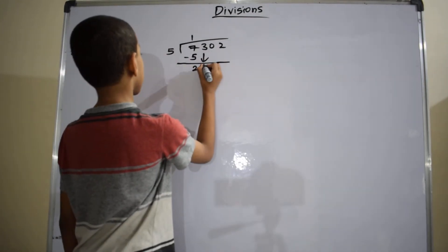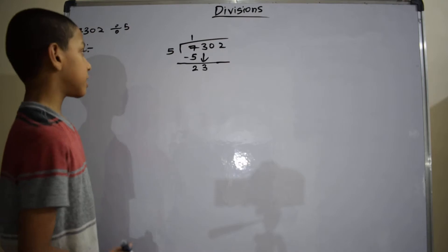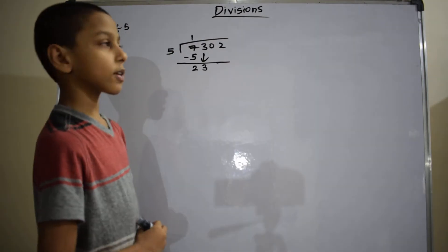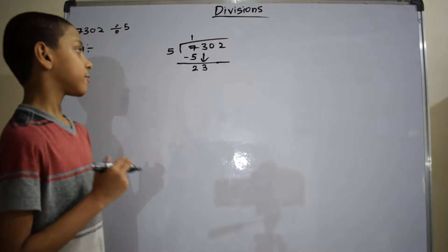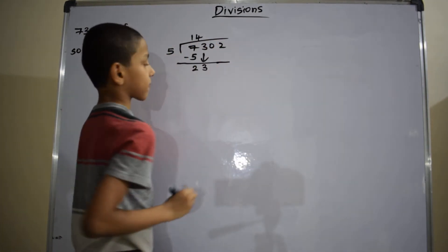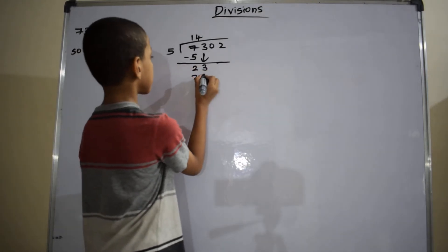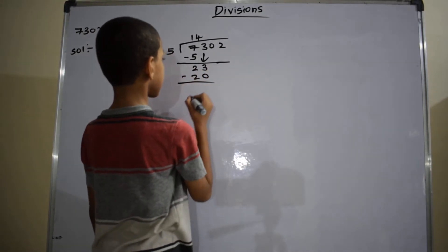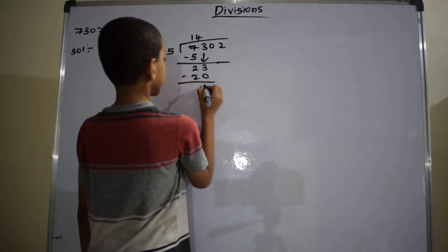Bring down this 3, then it becomes 23. Recite the table of 5 until you get 23. So 4 times 5 gives 20. The quotient is 4. Write the quotient 4 here. Write 20 below the 23 and subtract it. 23 minus 20 equals 3.